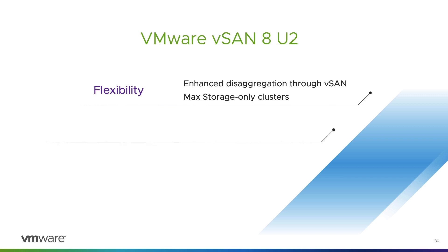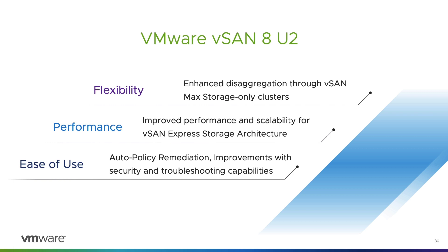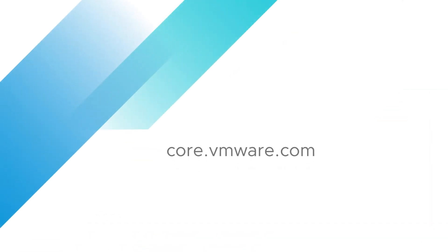Flexibility, performance, and simplicity are just a few ways to sum up the capabilities introduced in vSAN 8 Update 2. Through enhancements with disaggregation, vSAN 8 Update 2 can separate or disaggregate compute resources in all new ways. Core platform enhancements drive even better performance for workloads on the Express Storage Architecture without adding complexity. Finally, streamlined operations offer advantages to environments of all scales. For more information on vSAN 8 Update 2, go to core.vmware.com.